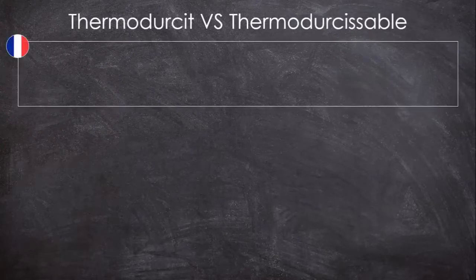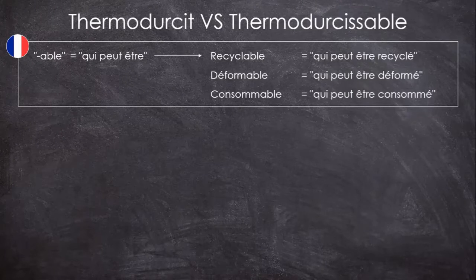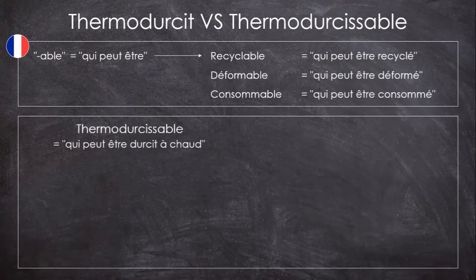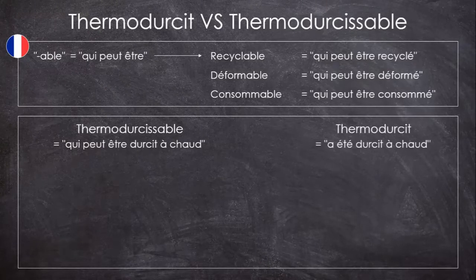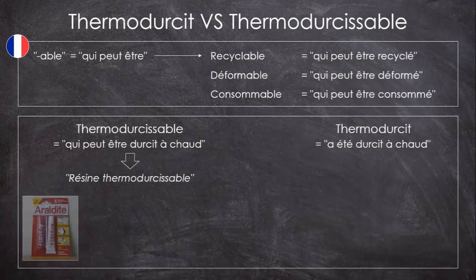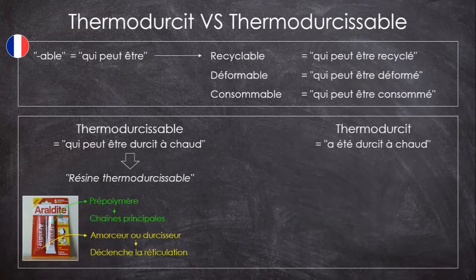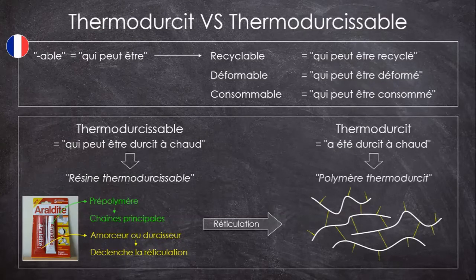Voyons rapidement la distinction entre les thermodurs et les thermodurcissables. En français, le suffixe « -able » sous-entend la possibilité : recyclable veut dire qui peut être recyclé, déformable qui peut être déformé, consommable qui peut être consommé. Du coup, thermodurcissable signifie qui peut être durci à chaud, alors que thermodurci, ou thermodur, signifie plutôt qui a été durci à chaud. Ce qu'on devrait appeler un thermodurcissable est très souvent une résine thermodurcissable, que vous connaissez peut-être sous forme de colles bicomposants, comme l'araldite, qui est de l'époxy. On va avoir dans un tube des prépolymères, c'est-à-dire des petits polymères qui vont encore pouvoir réagir, et dans l'autre un amorceur ou un durcisseur qui va permettre de lancer la réticulation lorsque le contenu des deux tubes sera mélangé. En réticulant, la résine thermodurcissable devient un polymère thermodurci, ou thermodur.